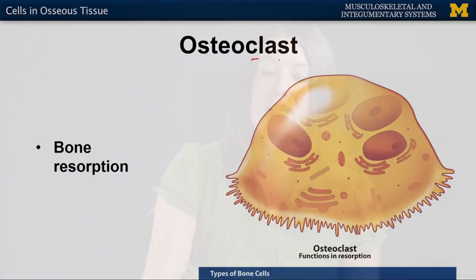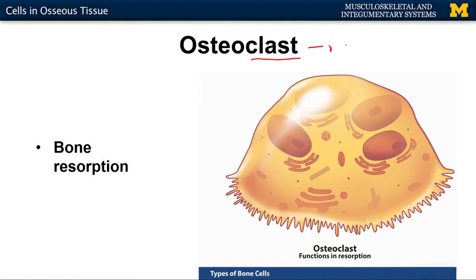The fourth cell type is the osteoclast. The suffix 'clast' indicates resorption or breakdown, and in this case it refers specifically to the breakdown of bone tissue.